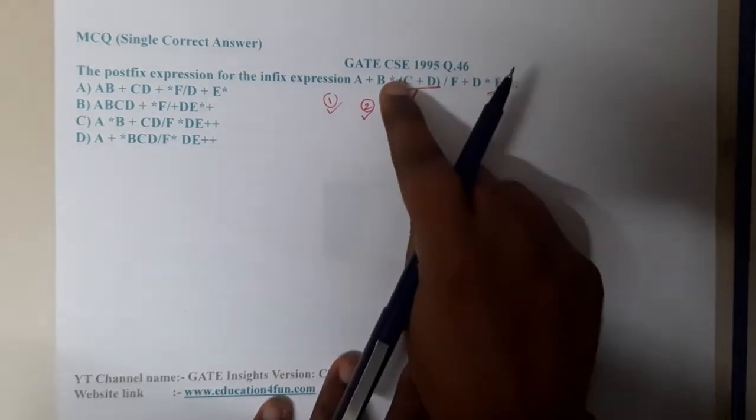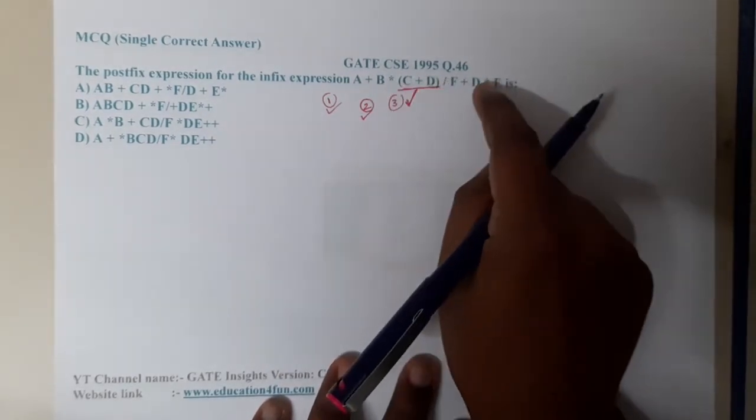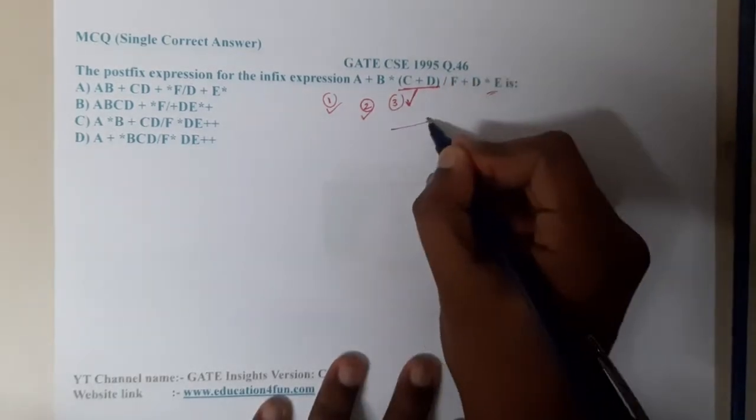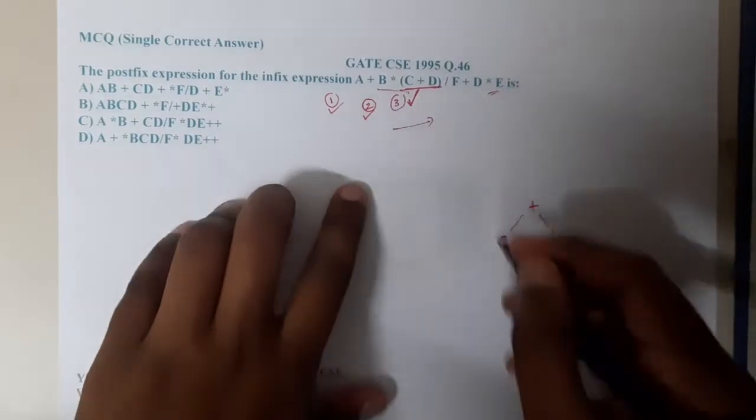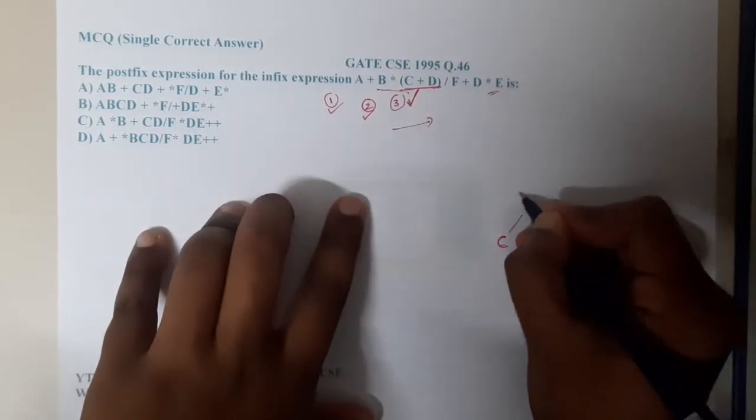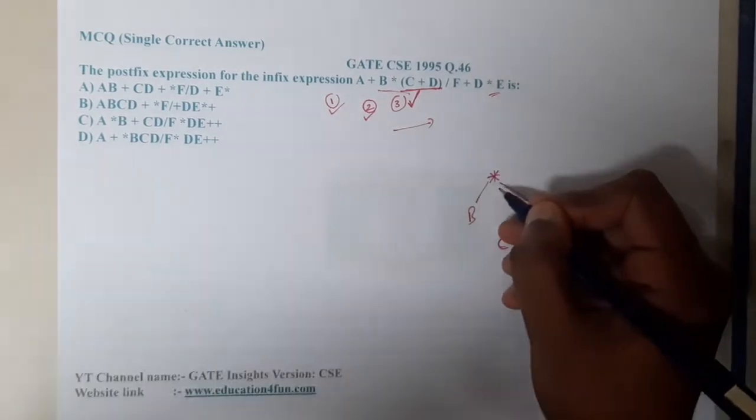After that, what is the highest precedence? We are having star, division, and star. In which order - star slash will go from left to right. The associativity will be from left to right. So let us combine these two first.